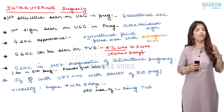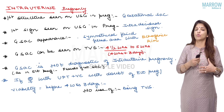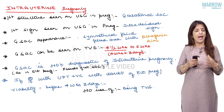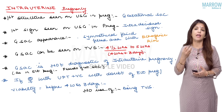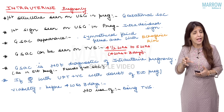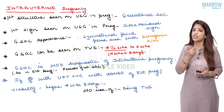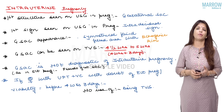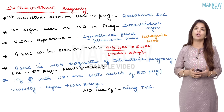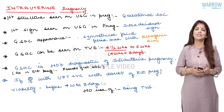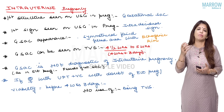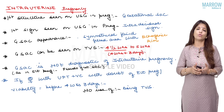Coming to intrauterine pregnancy — the first structure which you are going to see when a female comes with a urine pregnancy test positive is a gestational sac. The blastocyst is going to get implanted in the endometrium, and implantation is interstitial. Due to interstitial implantation, the first sign on ultrasound is the intradecidual sign — you get a gestational sac which is very deeply situated inside the endometrium. The gestational sac is a fluid-filled cavity, so the fluid will appear black, and you get a symmetrical fluid-filled cavity with an echogenic rim.